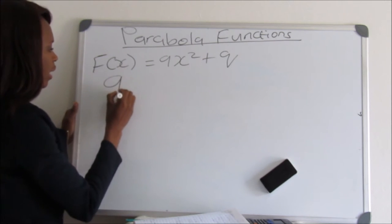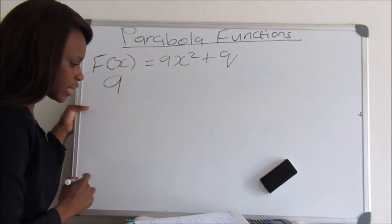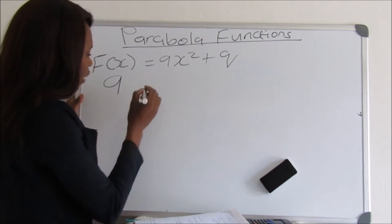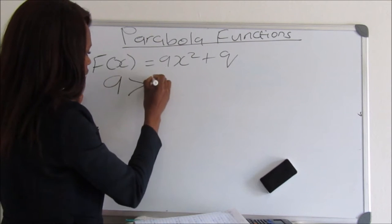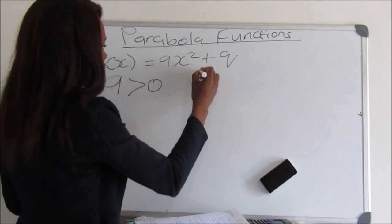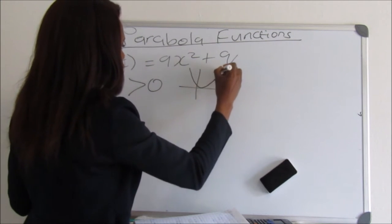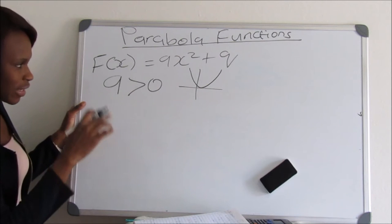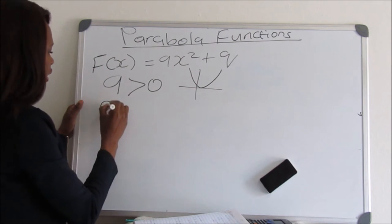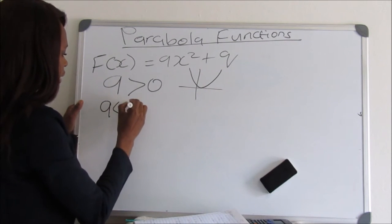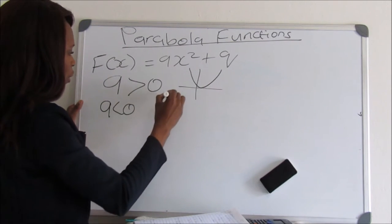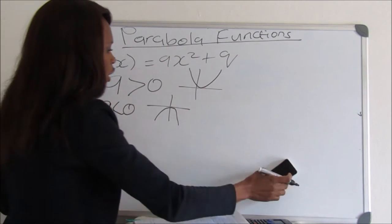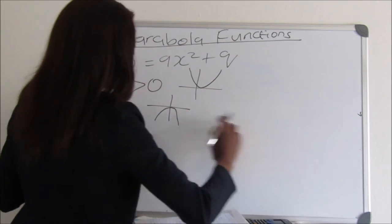The 'a' determines the shape of the graph. If a is greater than zero, then our graph will have a smiley face looking upward. And if a is less than zero, then the graph will have a sad face looking down.